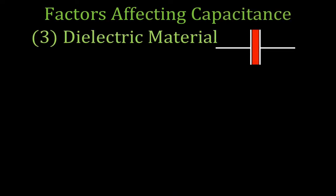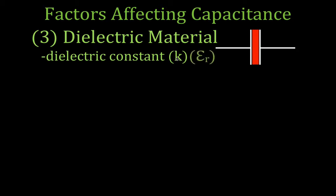Now what about the last thing, which is the dielectric? Every dielectric material is represented by a dielectric constant — it's a physical property, a constant for that dielectric. Usually the dielectric constant is given with the symbol K. If you're not in America, or maybe you're in Europe, or looking at a different textbook, you might see it represented as epsilon r. But it's K in America, epsilon r elsewhere, and they both represent the dielectric constant.